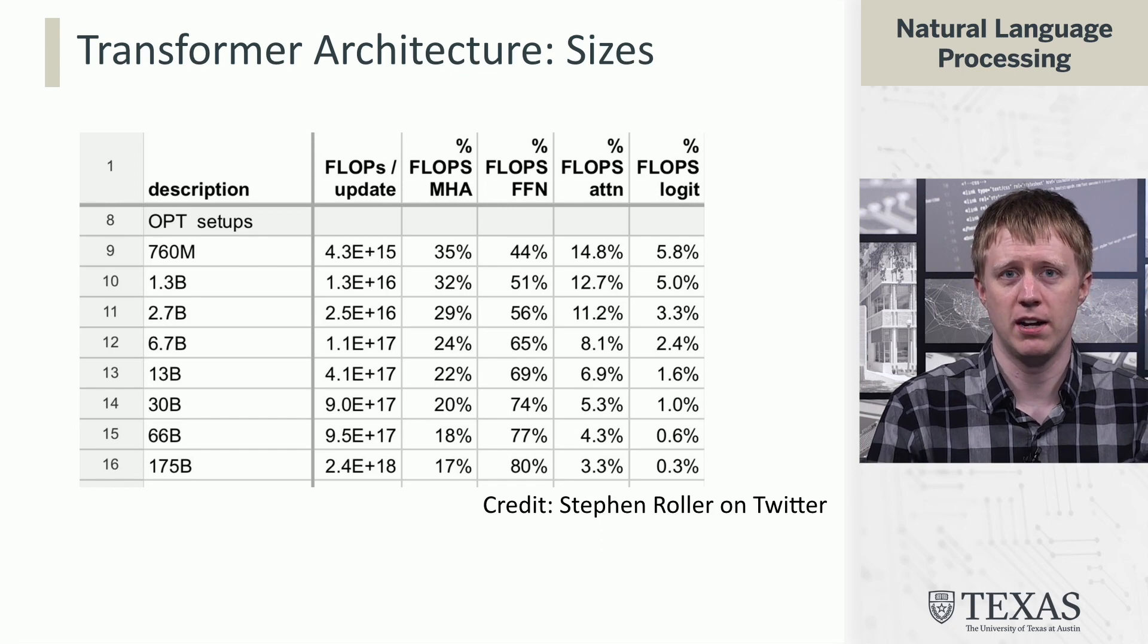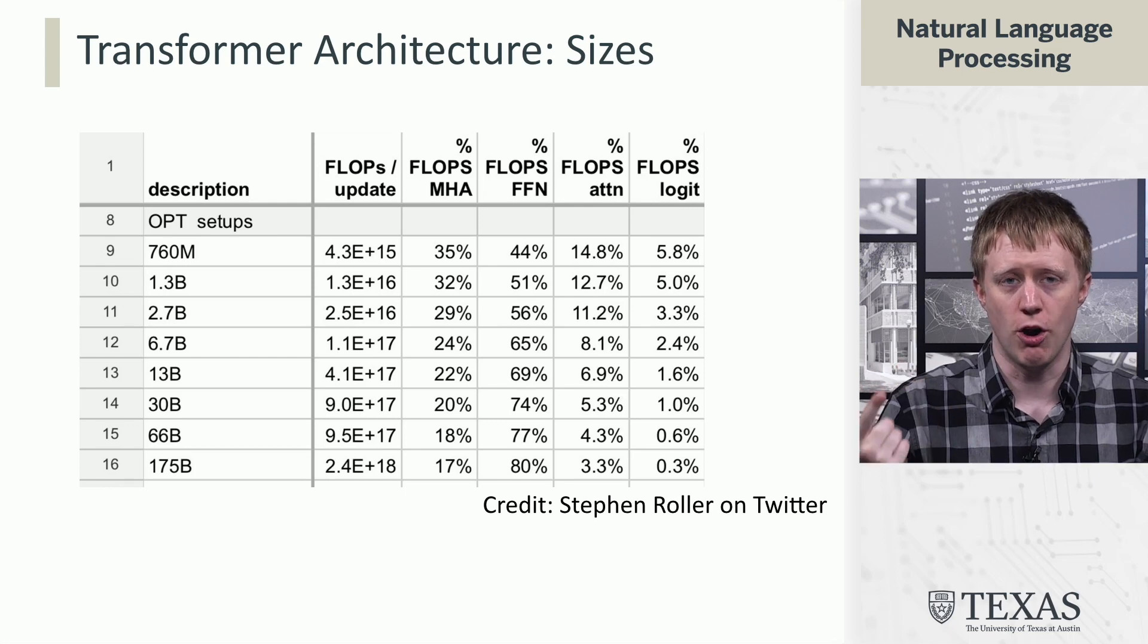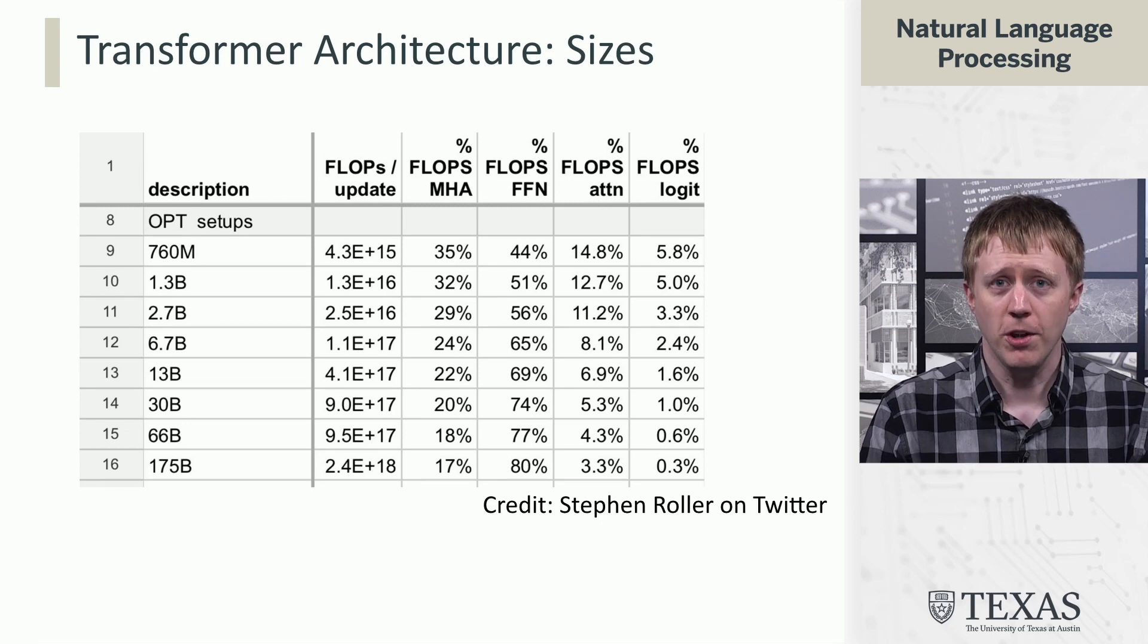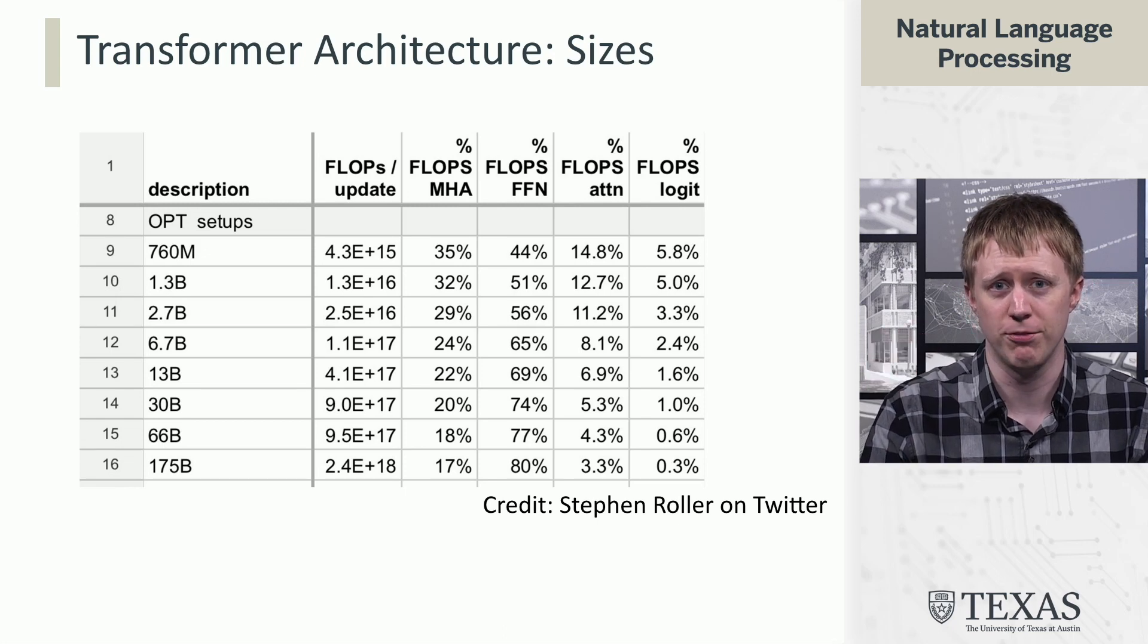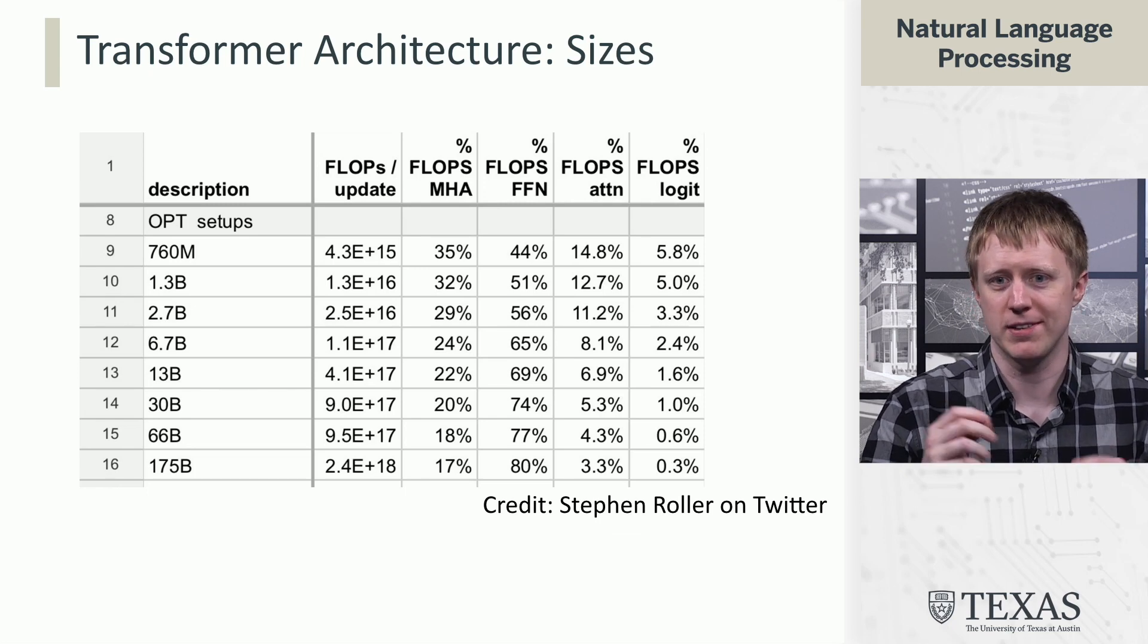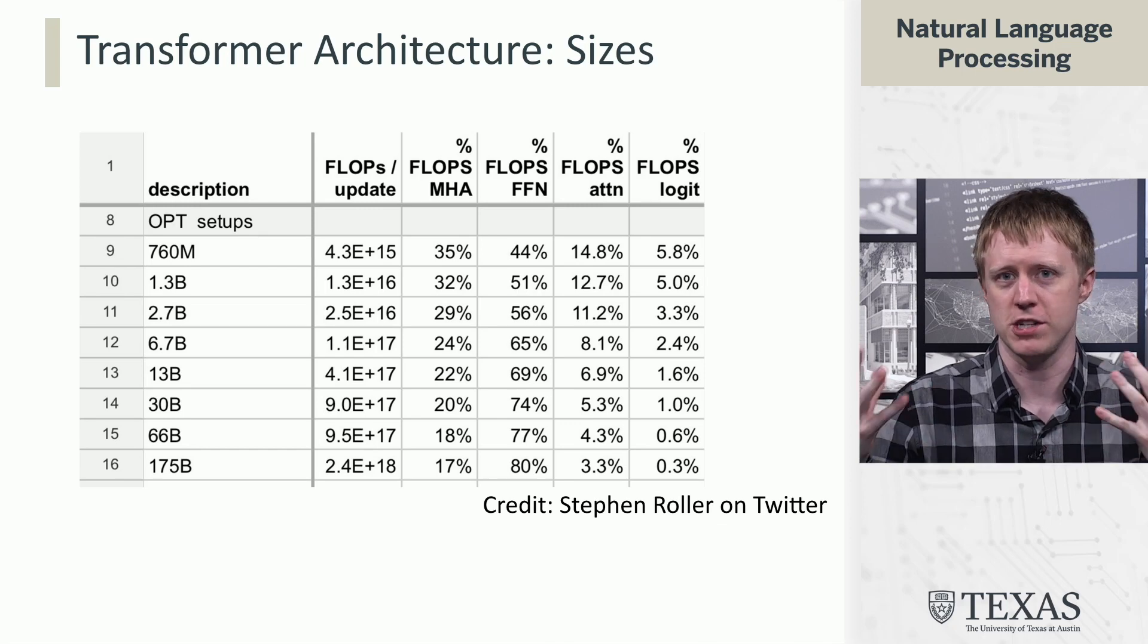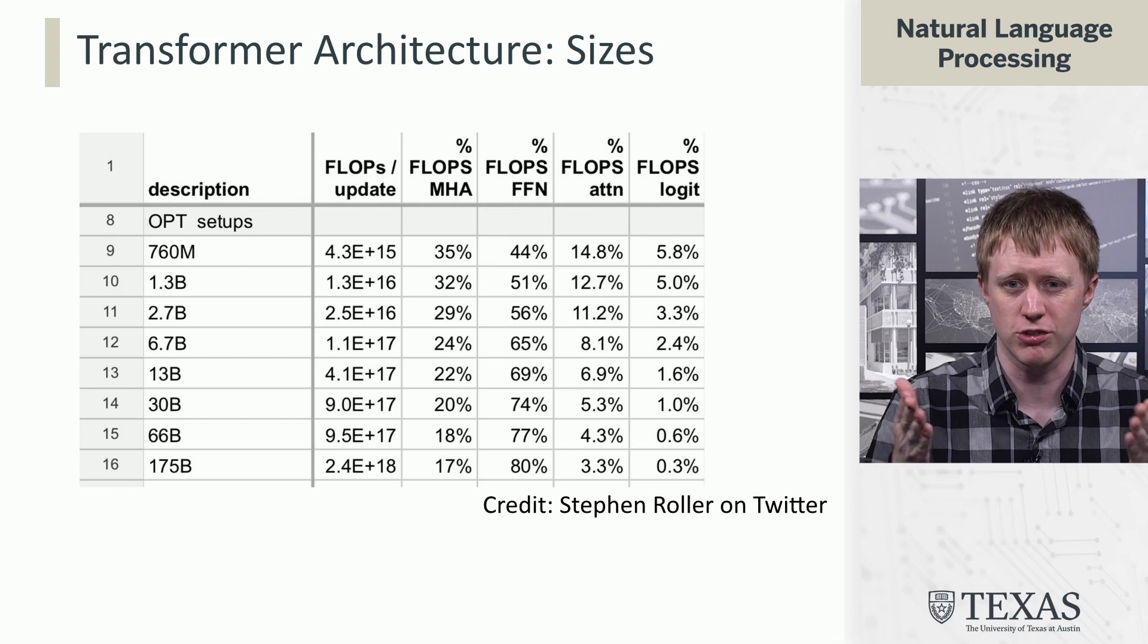If we look at where the actual floating point operations are happening in this model, we can look at this as a fraction of the overall computation. This is a model called OPT. That's like an open source version of GPT. So we know a little bit more about what's going on here. The multi-head attention floating point operations, if we go to the largest model at the bottom of this table, are only 17% of the operations. 80% of the operations are in that feed forward network. So even though I've been saying attention, transformers, these are the same thing. Attention is a very important component, but most of the computation is in the feed forward network. And when we think about why does ChatGPT know all these facts about the world? A lot of that is because these huge feed forward layers can just store so much of that stuff.